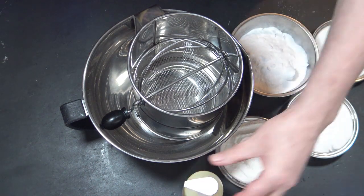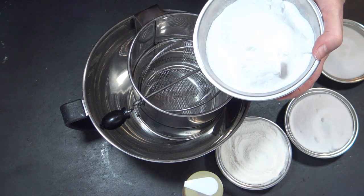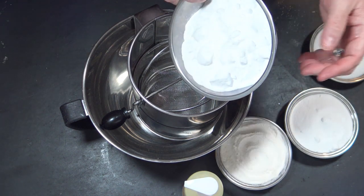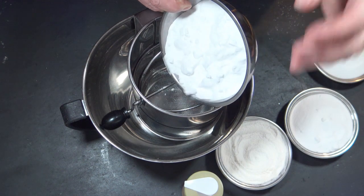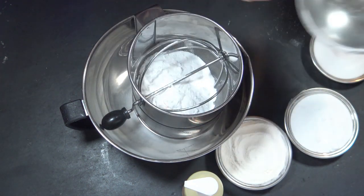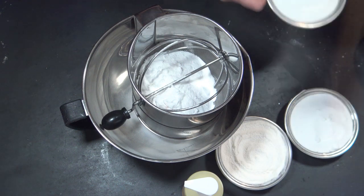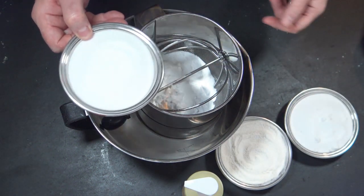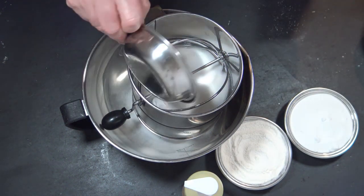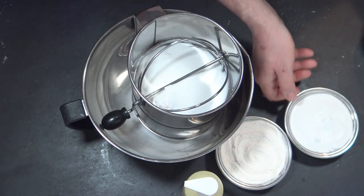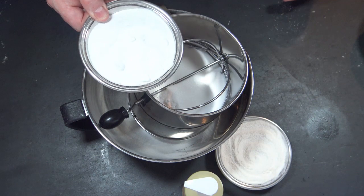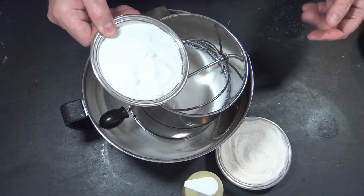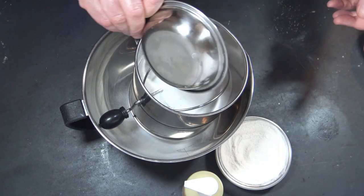So we're going to start out with, I like to sift everything so that it's in the smoothest possible form for putting into our molds. There's my baking soda, my citric acid. Now the citric acid sometimes doesn't go through so well because it's larger particles, but I'm going to put in our borax.